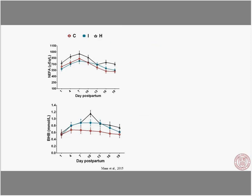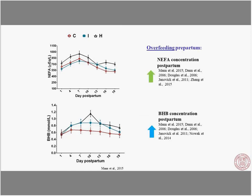Sabina Mann — now a faculty member at Cornell vet school — fed cows either a controlled energy diet for the whole dry period, an intermediate step-up diet, or a higher energy diet for the entire dry period. Just like many other studies have shown, overfeeding cows before calving leads to higher NEFAs, higher blood ketones, and lower intakes post-calving. So we really want to control energy levels before calving. Too low or too high both cause problems, and we also get in trouble if cows sort the diet.